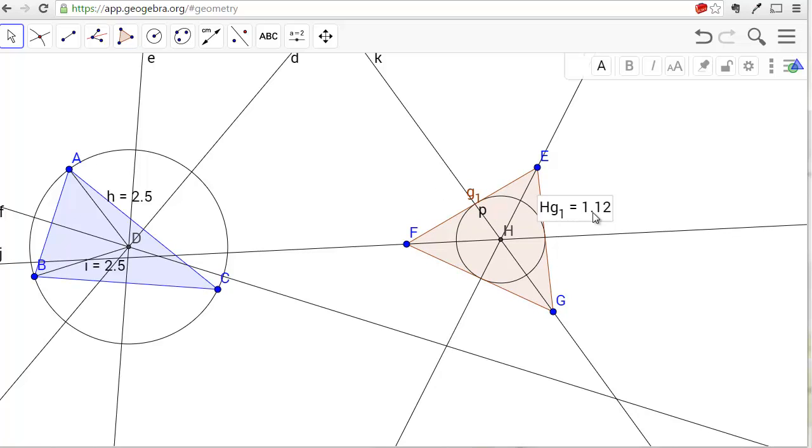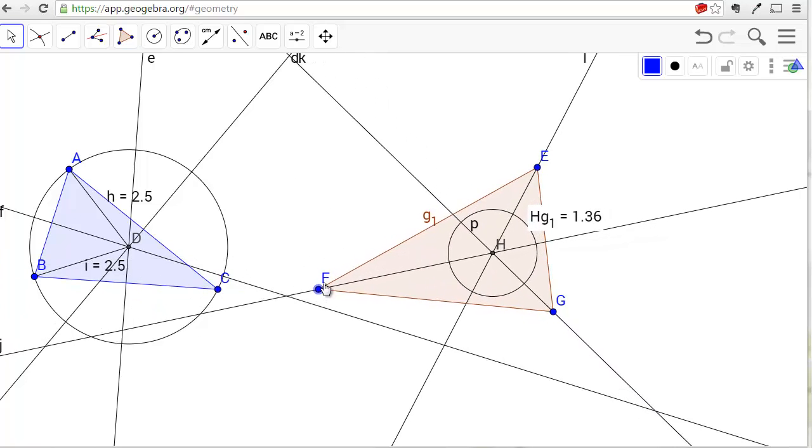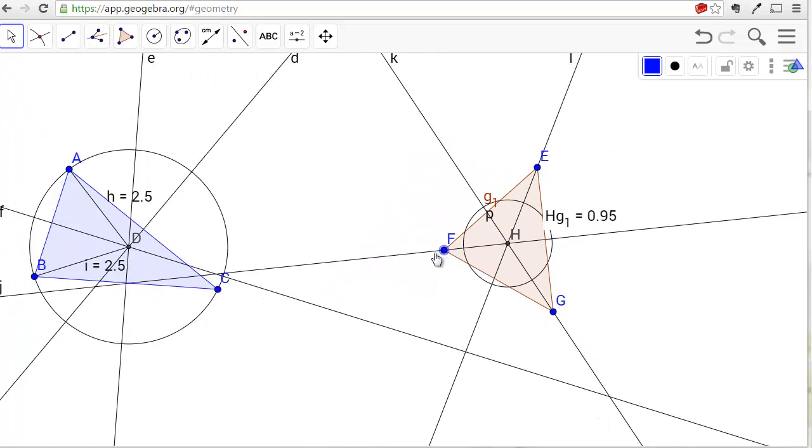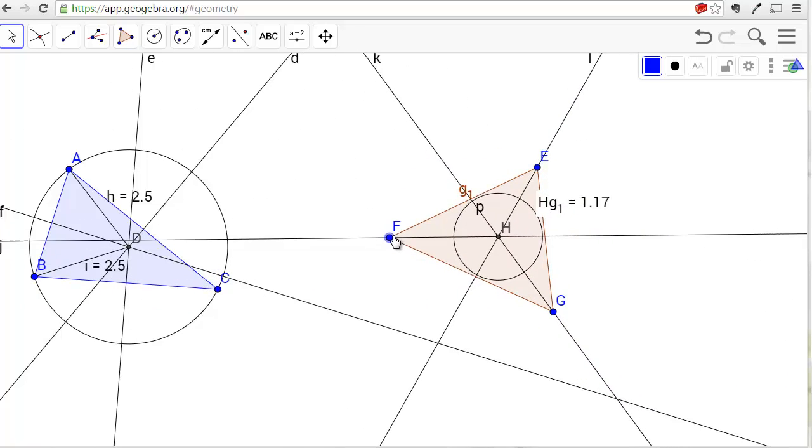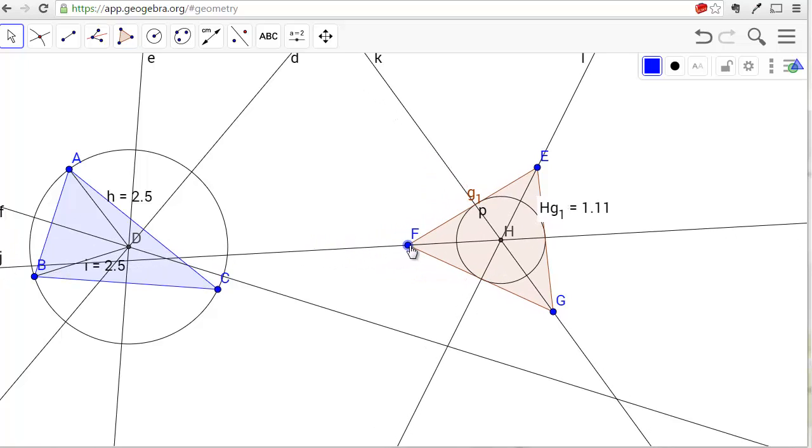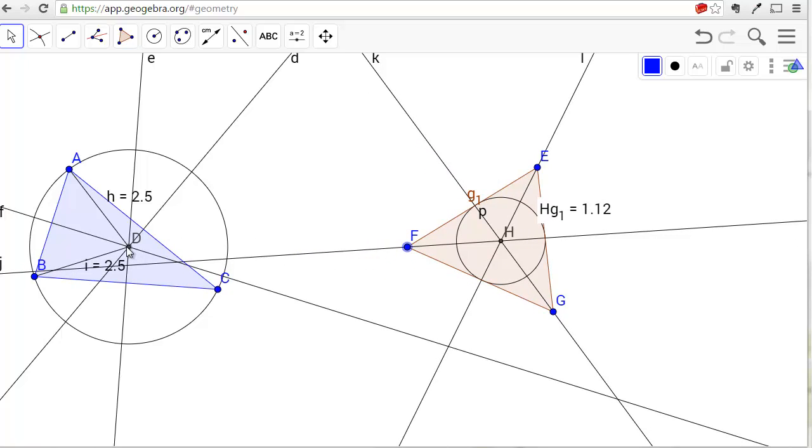Now unfortunately, because I statically fixed that distance to be 1.12, as I move my vertices around, it will not remain fixed. But just as D is called the circumcenter of this triangle, H is called the incenter of this triangle.